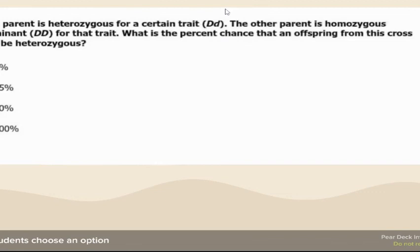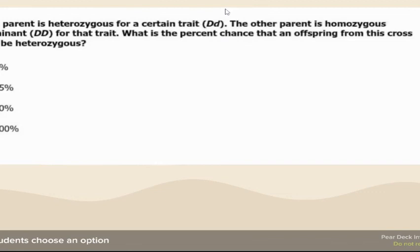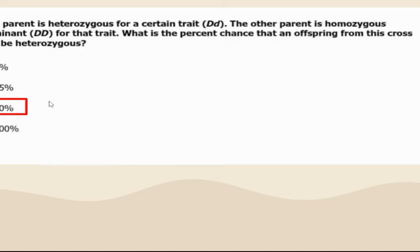One heterozygous crossed with one homozygous dominant — what's the percent chance an offspring will be heterozygous? This is 50%. With big D and little d crossed with big D big D, you get two homozygous dominant and two heterozygous offspring.